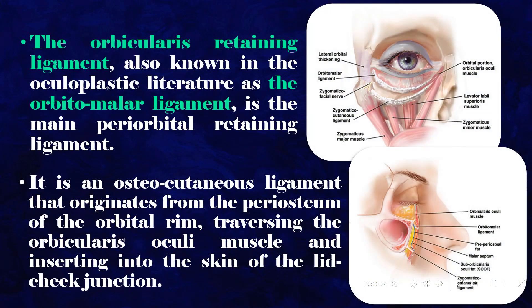The orbicularis retaining ligament, also known in the oculoplastic literature as the orbitomalar ligament, is the main periorbital retaining ligament. It is an osteocutaneous ligament that originates from the periosteum of the orbital rim, traversing the orbicularis oculi muscle and inserting into the skin of the lid-cheek junction.